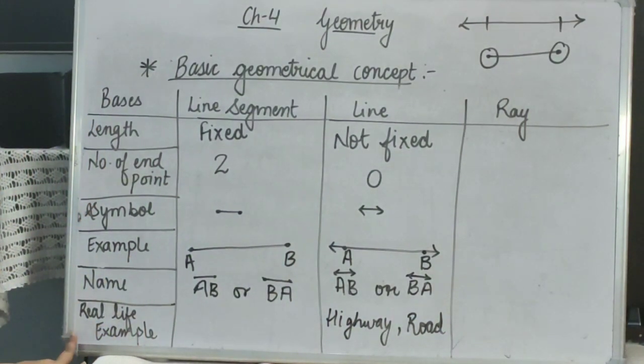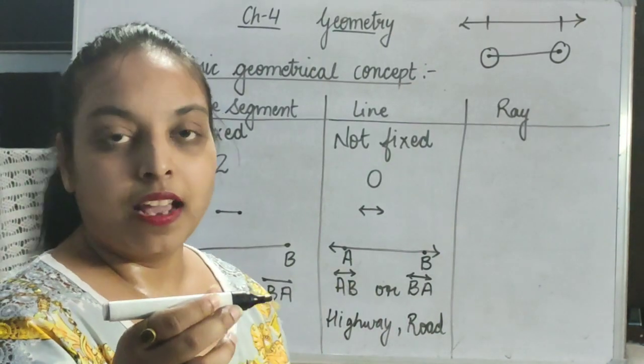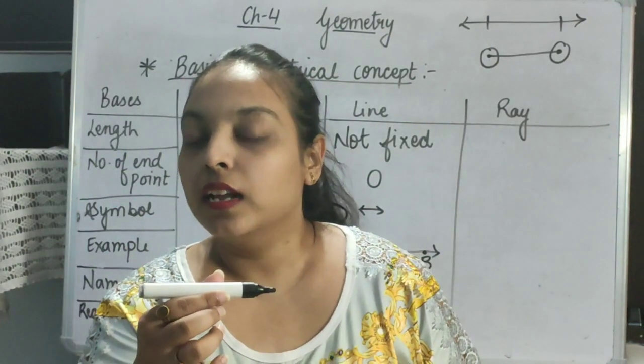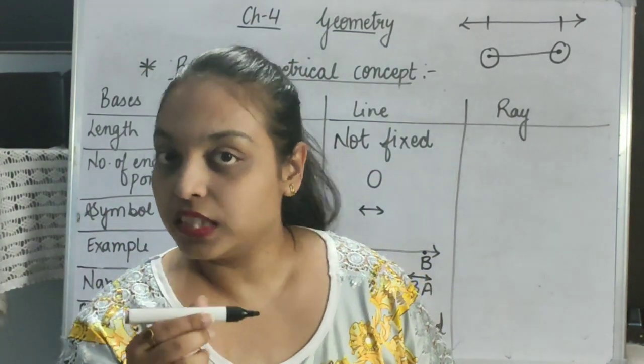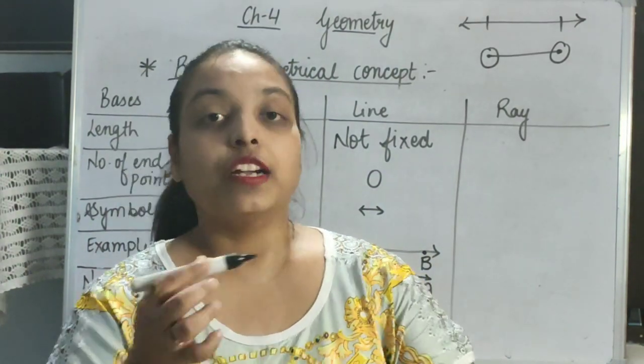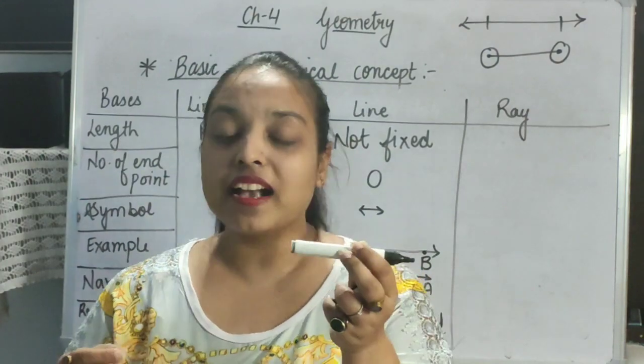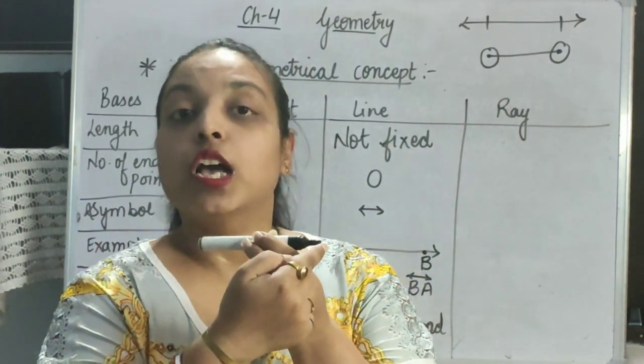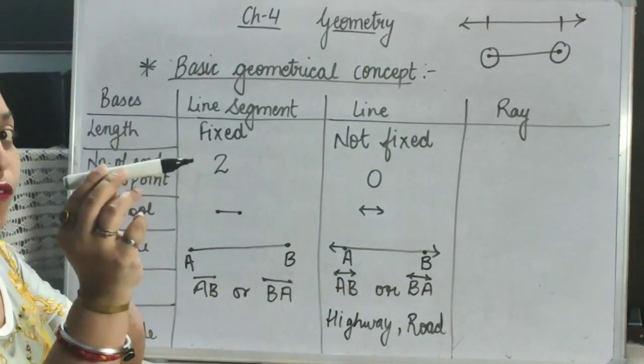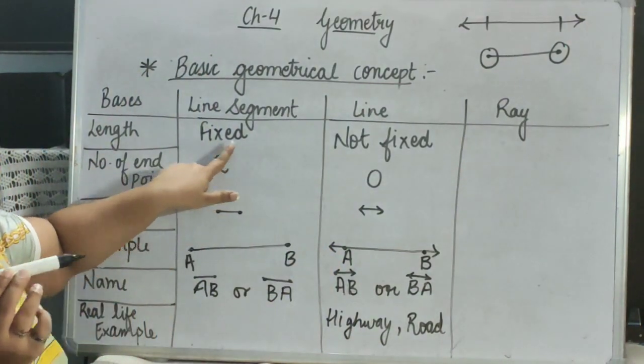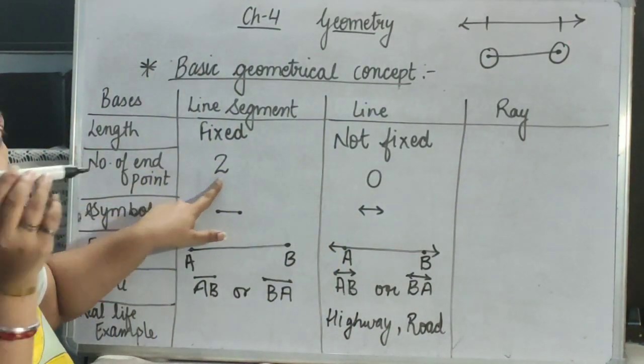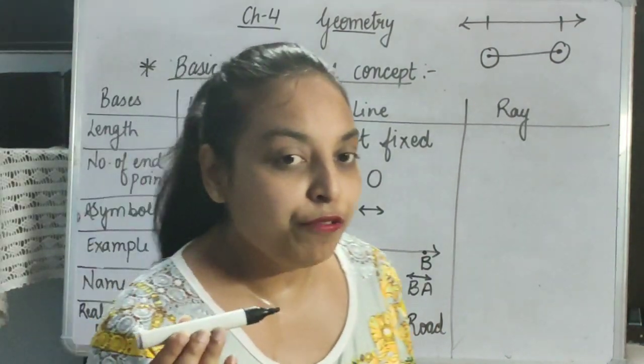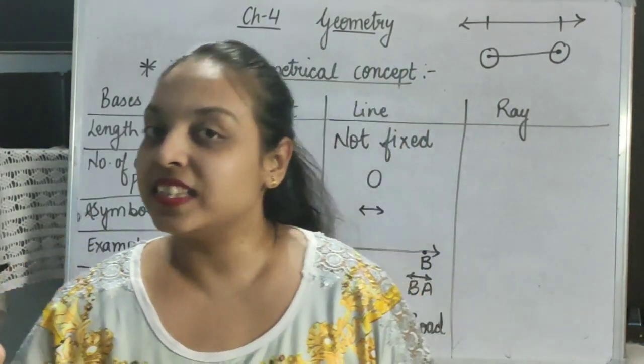Now, this is the example of the real life example. Can you see this? What is in my hand? I have marker. Is the length fixed for it? Yes. Does this marker have two points? Yes. First, second. So, if the length of this marker is fixed, it has two end points. So, this is the example of line segment.